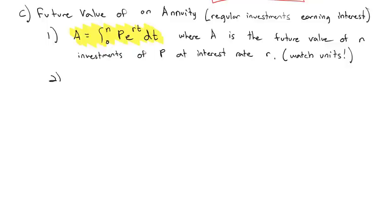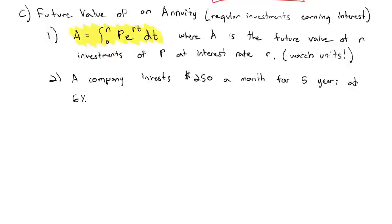Here's an example. A company invests $250 a month for five years at 6% interest, and we want to know how much is in the account at the end of five years. We're making investments monthly, which means the annual interest rate of 0.06 needs to be divided by 12 to get the monthly rate of 0.005.